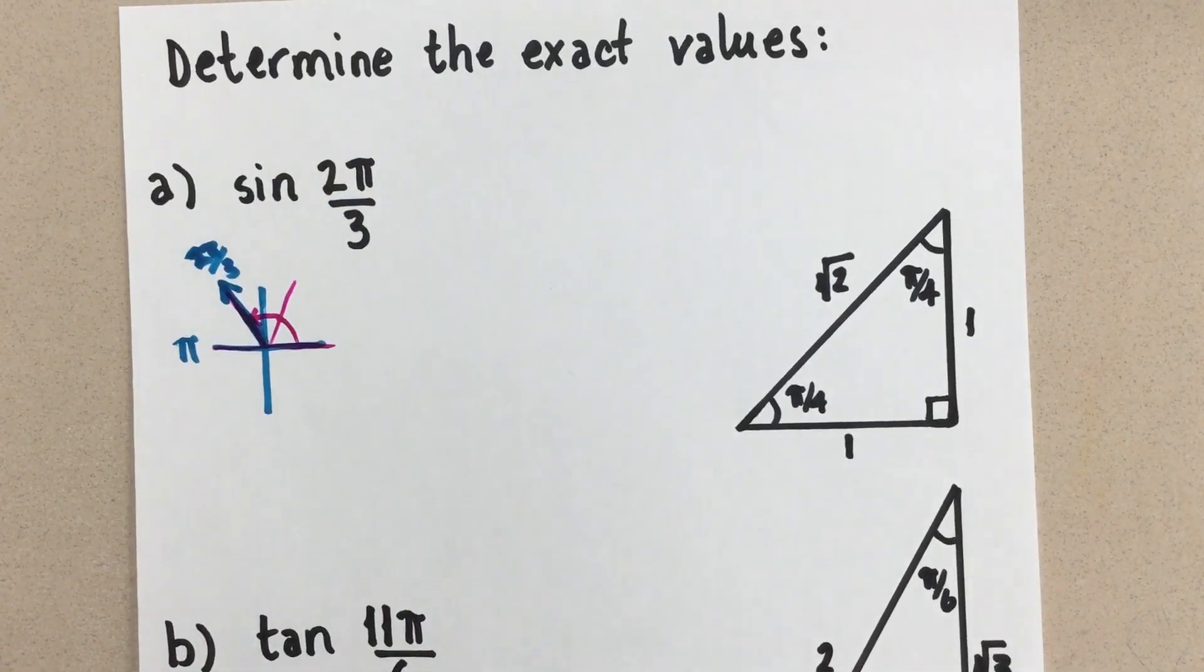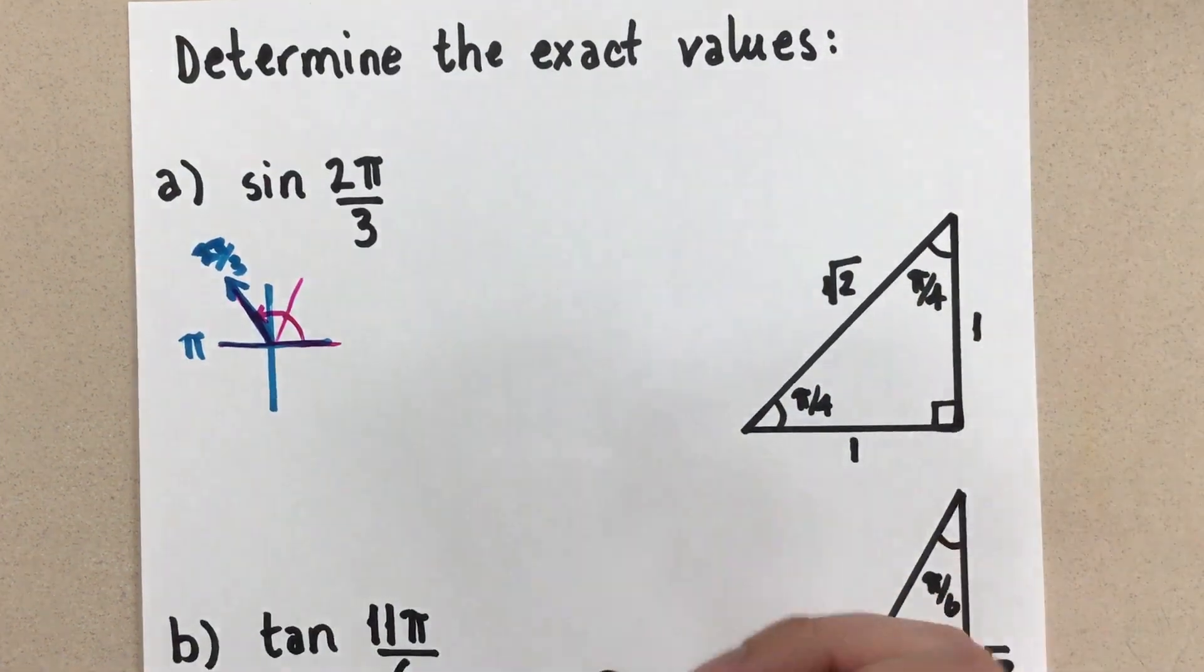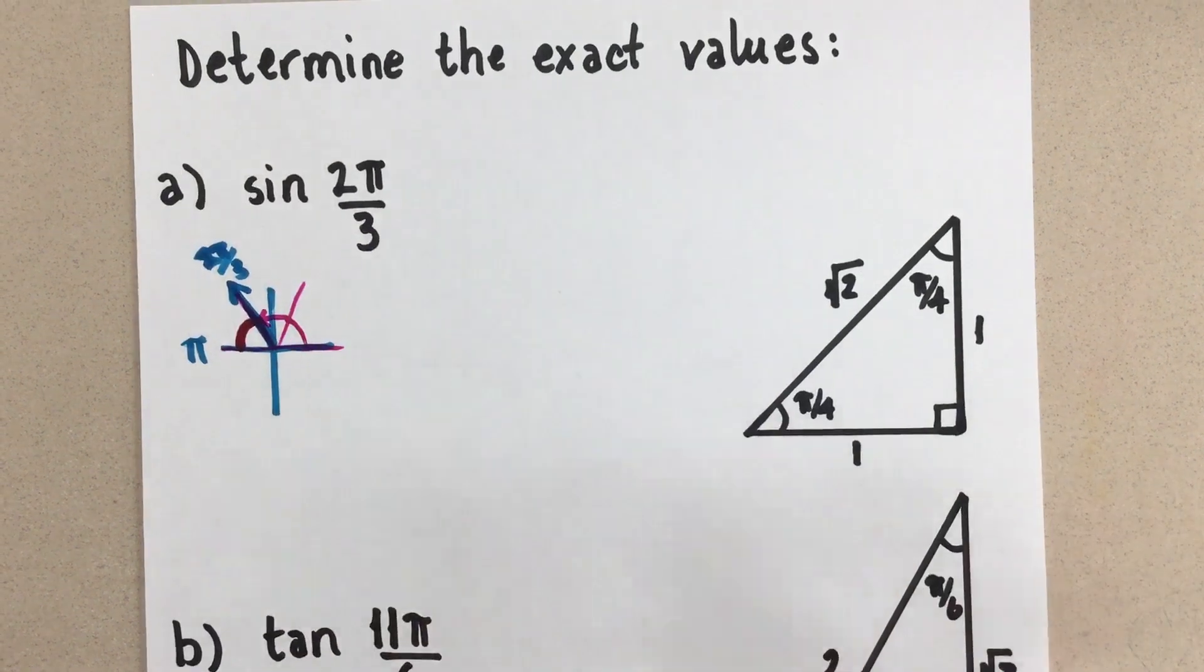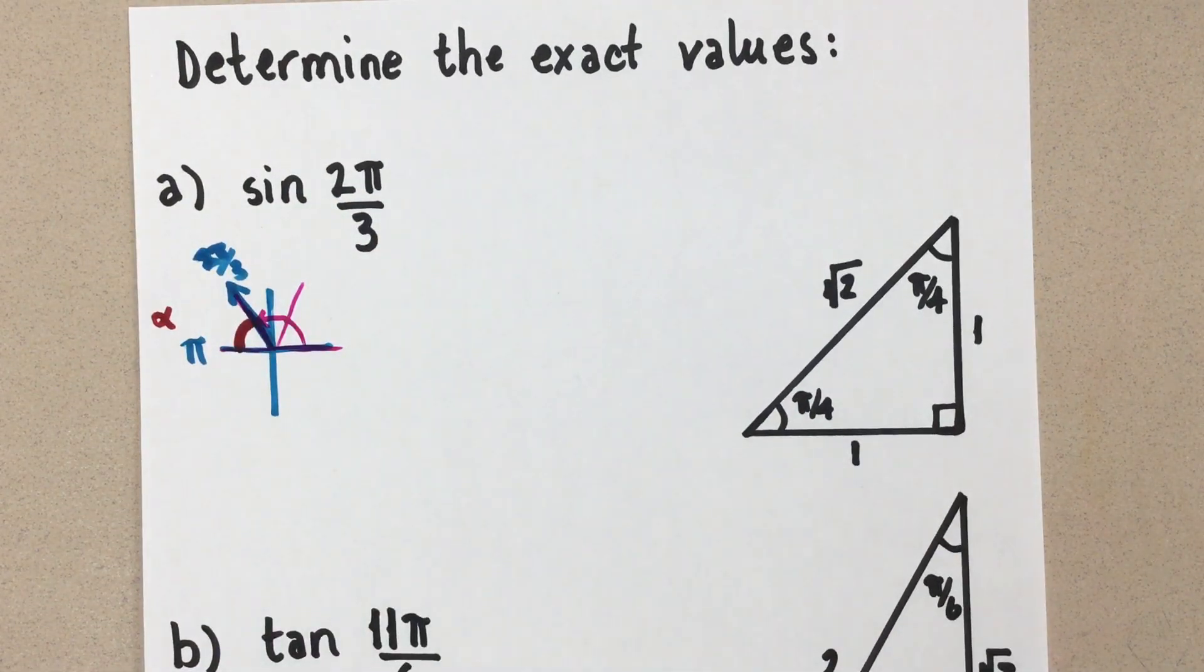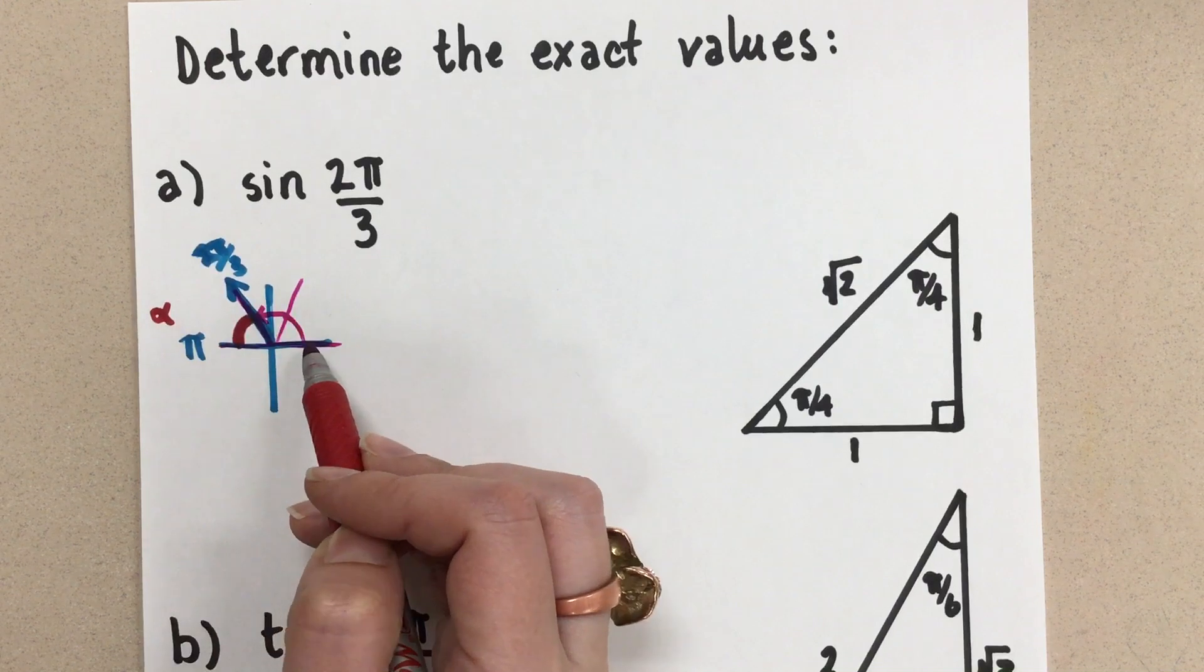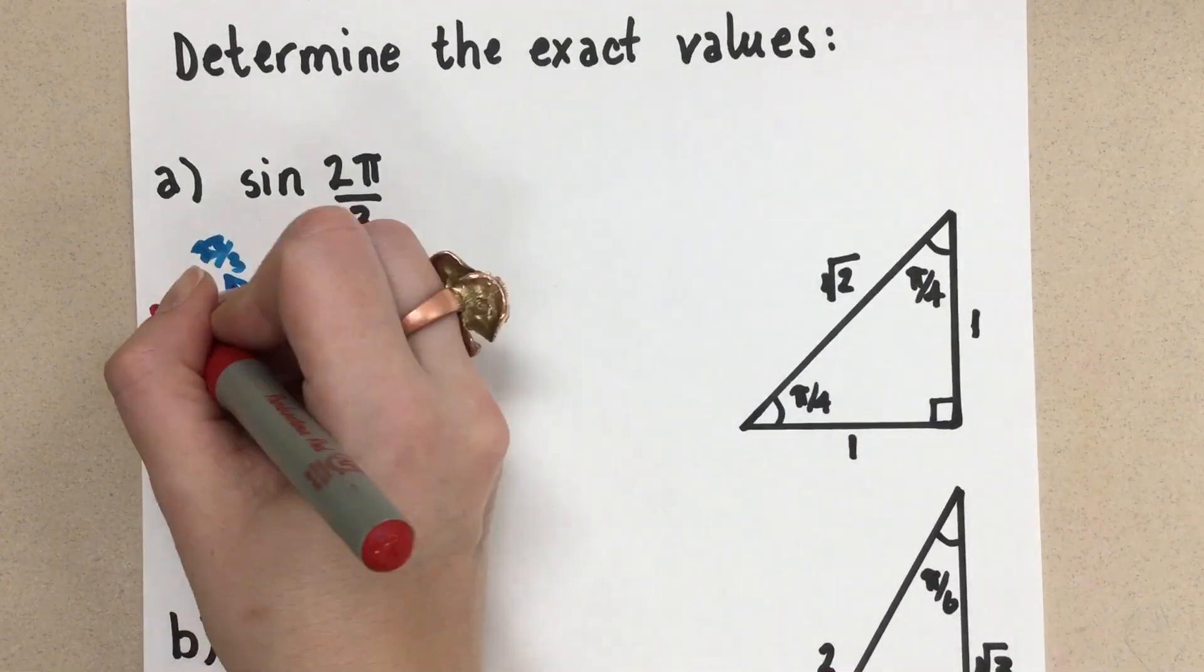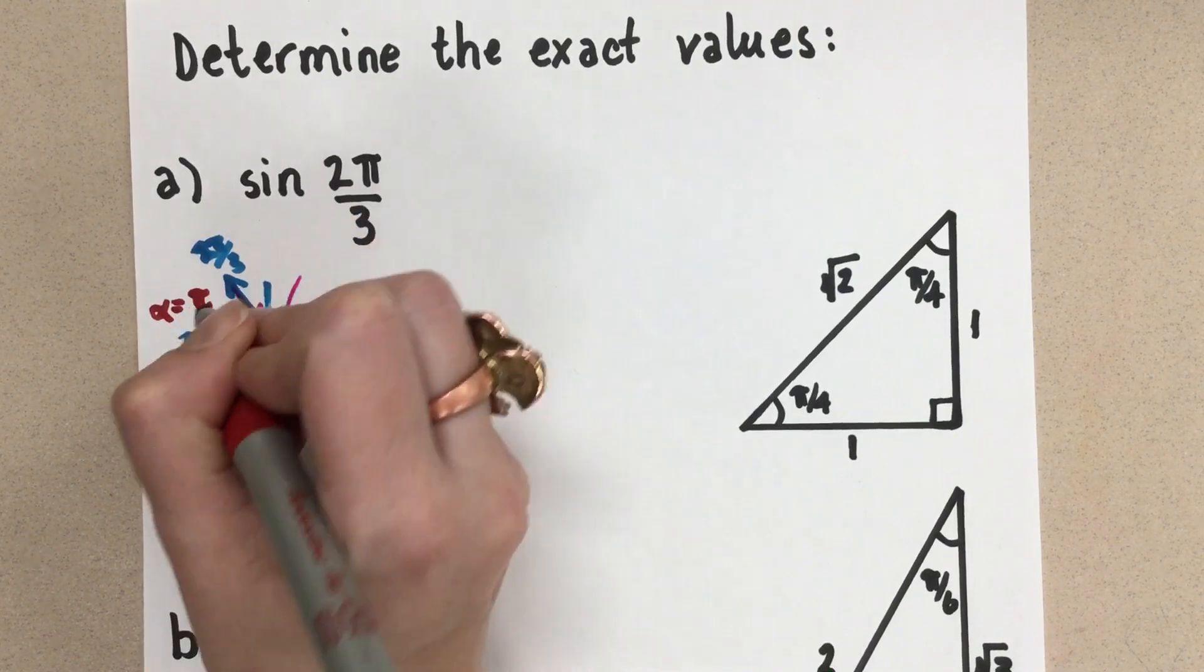So now, based on that sketch, what we really want to work with always is the related acute angle. And so right here, that angle, we can call that alpha for the related acute angle, is what we really want to do our calculations with. So if this was 2 thirds of a π and this whole thing is 1 π, then that little bit must be 1 third of a π.